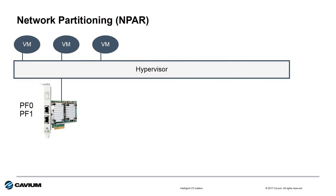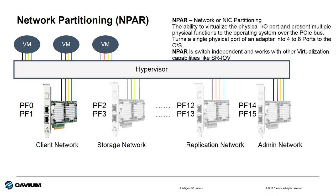Let's talk about network or NIC partitioning, otherwise known as N-PAR. With a standard 10 gig adapter, the hypervisor manages all the different network connections required by the VMs in software, and the bandwidth requirements are shared on a physical port. With N-PAR, the adapter virtualizes the physical port into four or eight physical functions, presenting virtual adapters to the hypervisor. The bandwidth available on each of these virtual adapters can be set by the system administrator and can be guaranteed a quality of service.